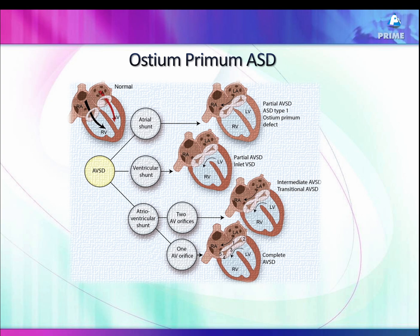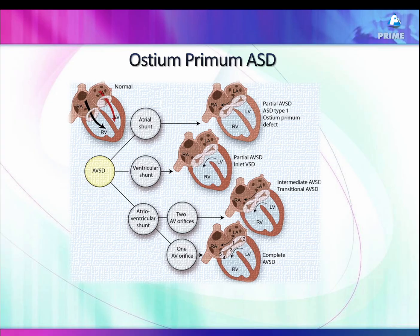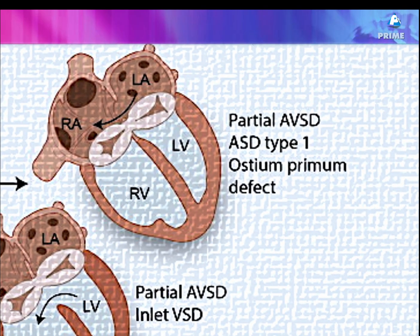We can see ostium primum ASD pretty well in the fetus. With AVSD, you can have an atrial shunt, a ventricular shunt, or both — these are the various types of AVSDs, which I'll discuss in the next video. If we talk about the primum ASD, it is actually a partial AVSD where the crux is not well formed.